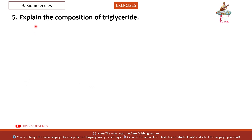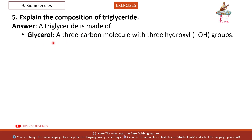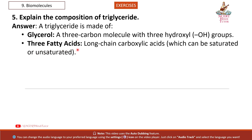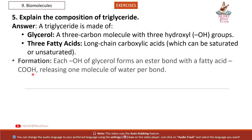Question 5: Explain the composition of triglyceride. Answer. A triglyceride is made of glycerol — a 3-carbon molecule with 3 hydroxyl (OH) groups — and 3 fatty acids, which are long-chain carboxylic acids that can be saturated or unsaturated. Each OH of glycerol forms an ester bond with a fatty acid COOH, releasing one molecule of water per bond.